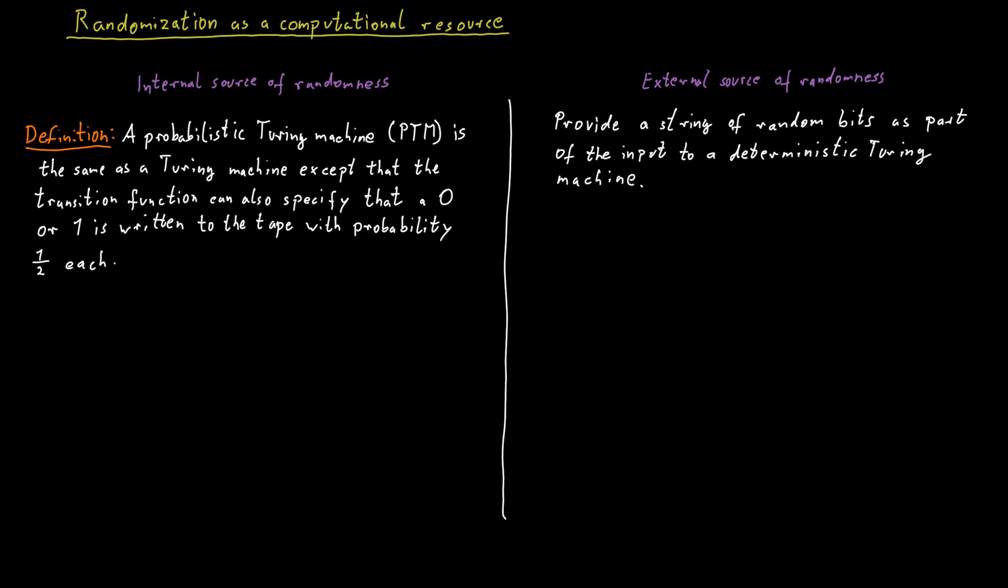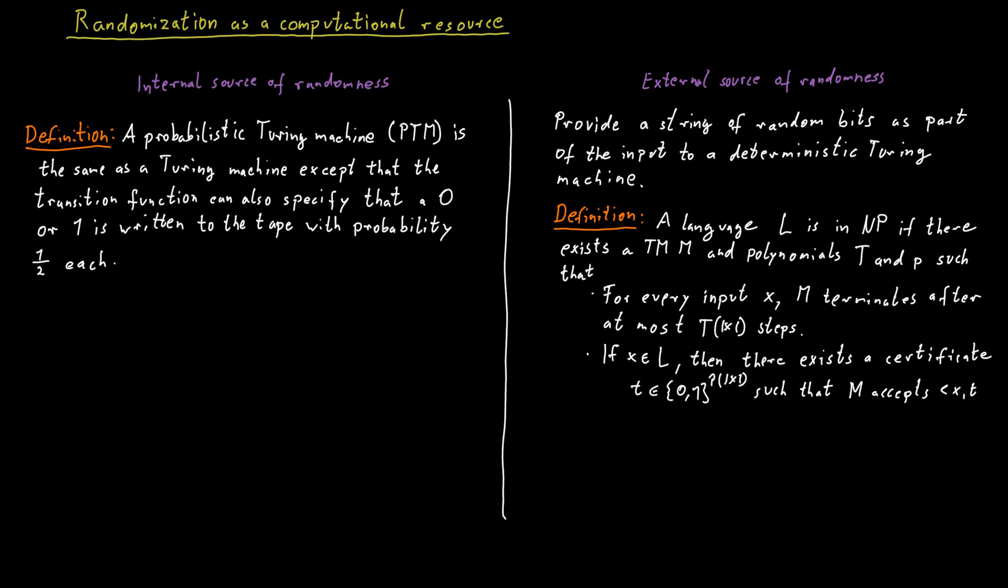Let us remind ourselves what the definition of NP really was. Let us write it down again. And now think about instead of a certificate, we just provide a random string of bits to the certifier. What will happen? Well, if the word x belongs to the language, we know that there exists a certificate that makes the certifier or verifier accept the input. This is just the same as saying that if we provide a string of random bits, that there is a positive chance if we find just the right sequence of random bits by chance that the machine will accept.